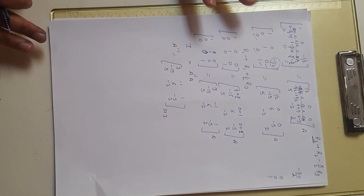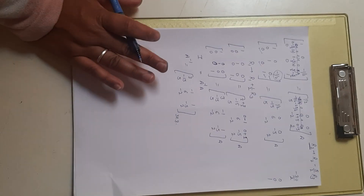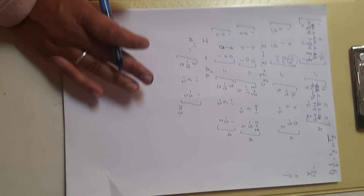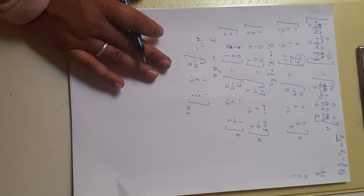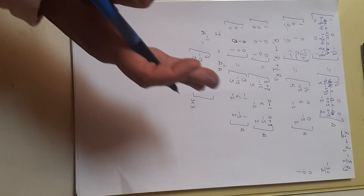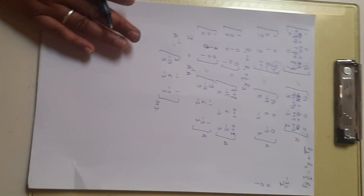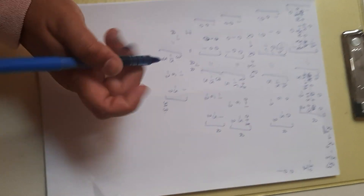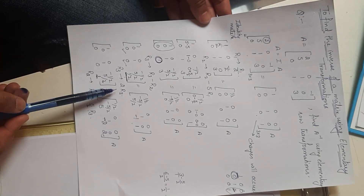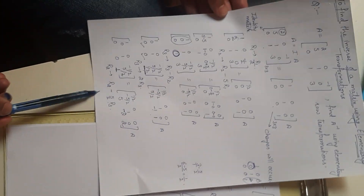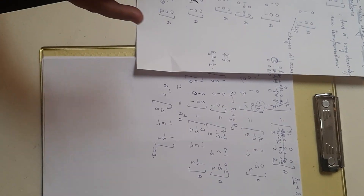In the same manner you can find A inverse using elementary column operations. The only restriction is that if you start with column operations, you must perform every operation on columns instead of rows. You cannot switch between rows and columns in the middle of the process.